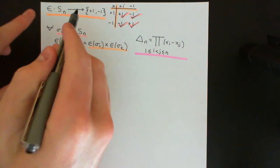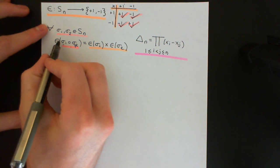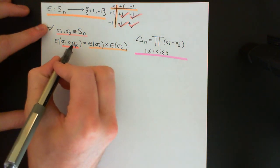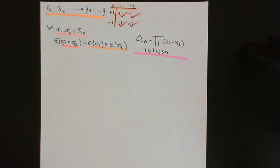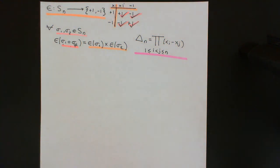These two groups are homomorphic: to work out the sign of sigma 1 composed with sigma 2, you can just work out the sign of each and multiply them together in the multiplication table. Composing two even permutations gives an even permutation; two odd permutations give an even permutation; and an even with an odd gives an odd, either way round. In the next video we'll calculate the sign of a transposition, show that this is a surjective homomorphism, and understand how this captures the concept of how many transpositions a permutation has in any transposition decomposition.